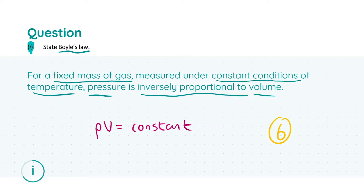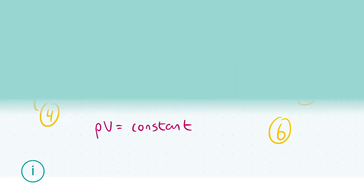For this part you're going to get a total of six marks. The breakdown is: four marks for stating 'for a fixed mass of gas,' and then another two marks for correctly stating that pressure is inversely proportional to volume.